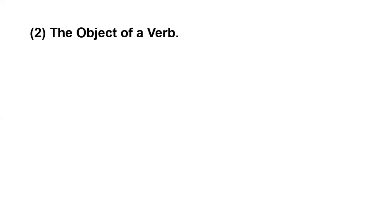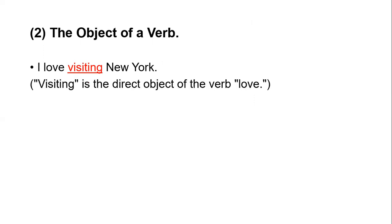The next function is gerund as the object of a verb. 'I love visiting New York' — visiting is the direct object of the verb 'love,' and New York is the complement of this gerund. Second case: 'He likes running' — in this case, running is basically the direct object of the verb 'likes.'